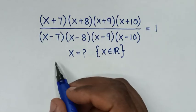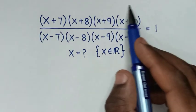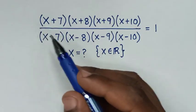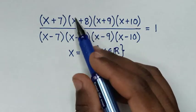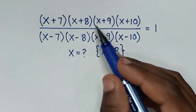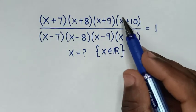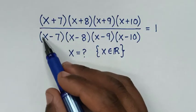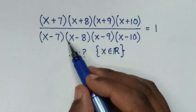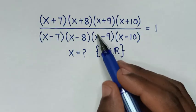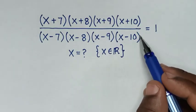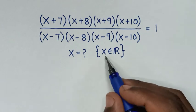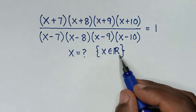Hello, you are welcome to solve this math problem, which is (x+7)(x+8)(x+9)(x+10) over (x-7)(x-8)(x-9)(x-10) equals 1. To find the value of x, show that x is an element of the real numbers.